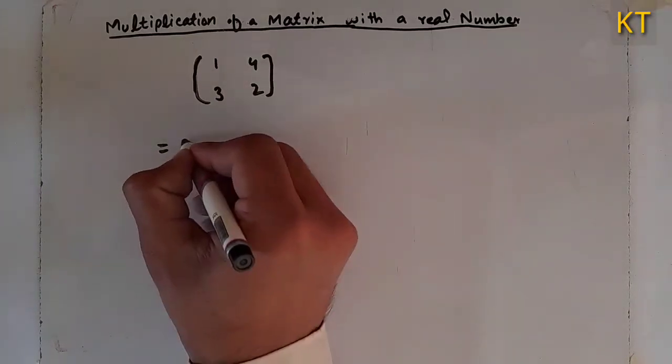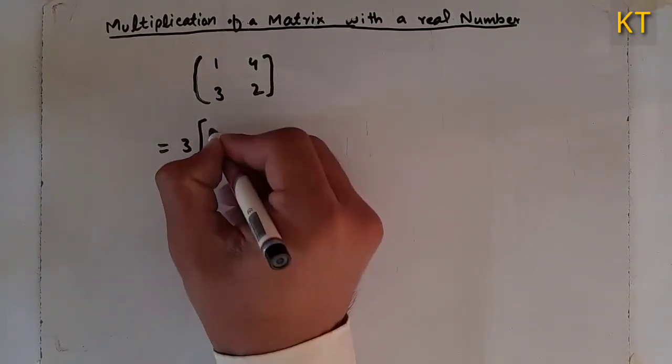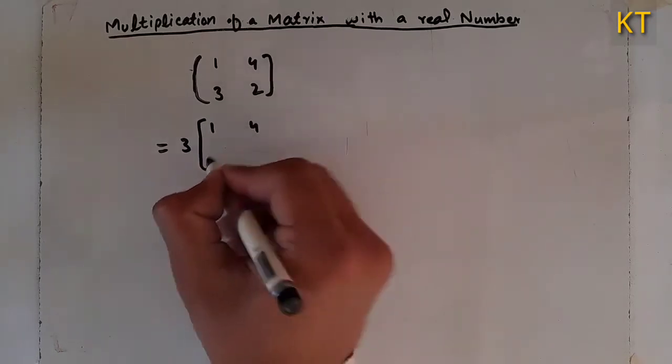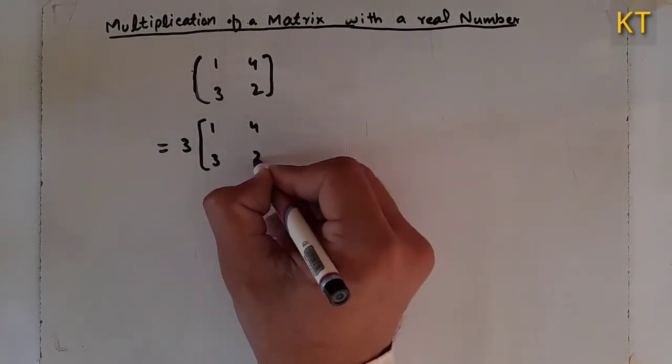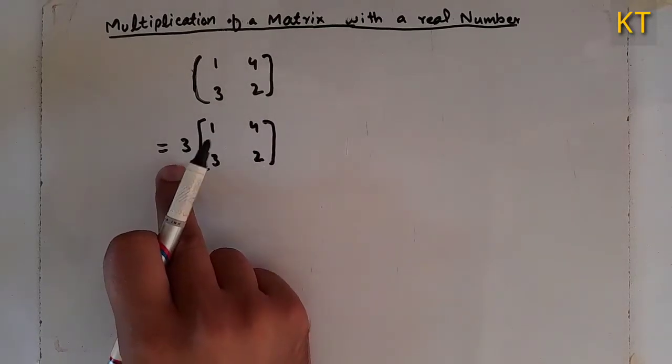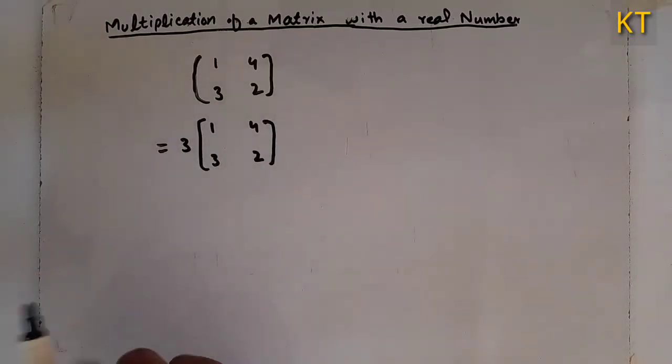Three into one, four, three, two. The real number and the matrix will be multiplied.